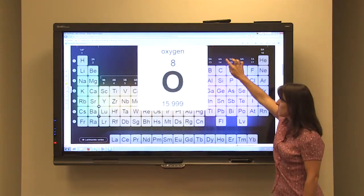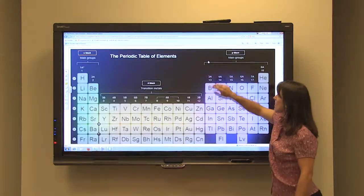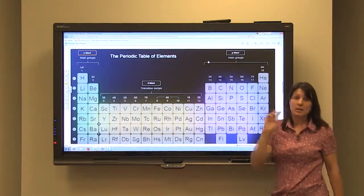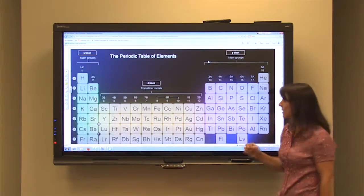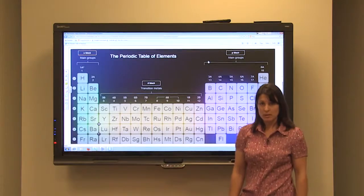So carbon, for example, is in group 4A. Carbon's in group 4A, has 4 valence electrons. Magnesium's in group 2A, it'll have 2 valence electrons.